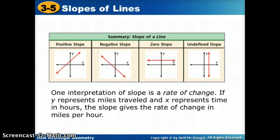Another way to represent, or another thing we use slope for is what we call rate of change. So if y represents miles traveled and x represents time in hours, the slope gives the rate of change in miles per hour. So rate of change is normally just slope applied to a real situation.